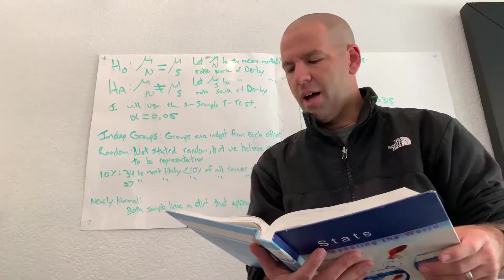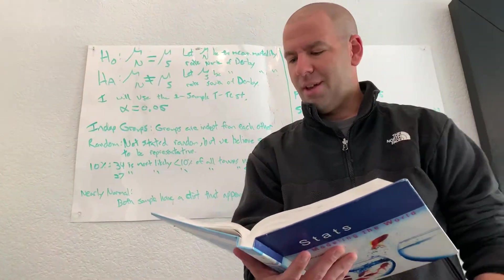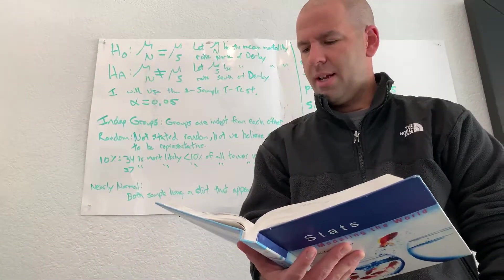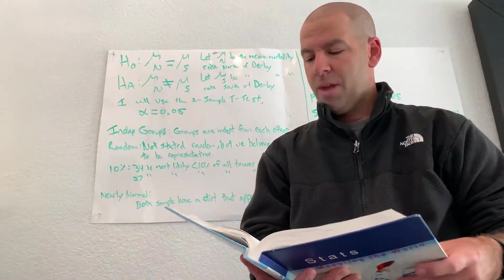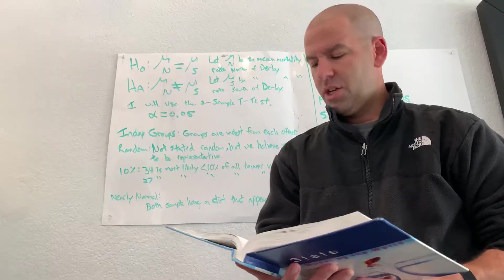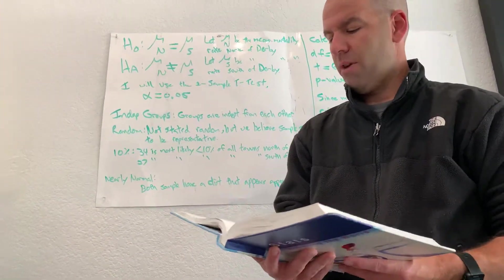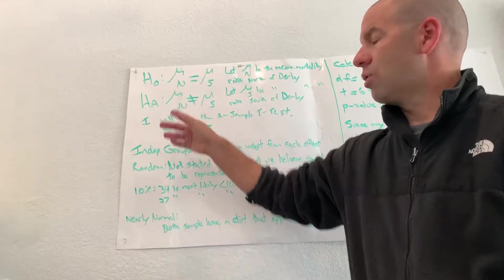For both north and south of Derby, it's the mortality rate, and when you look at the numbers, it sure looks like the mortality rate from north of Derby is greater than the mortality rate south of Derby.